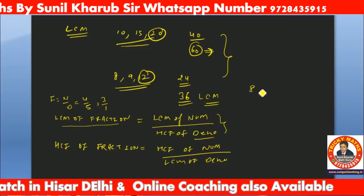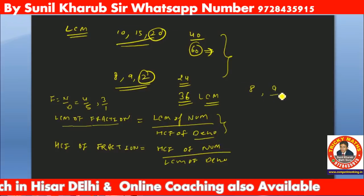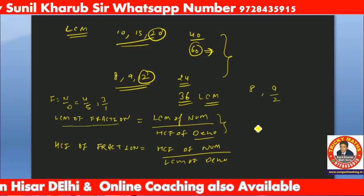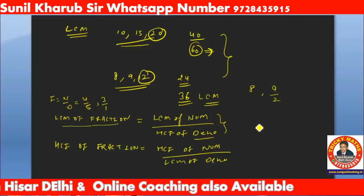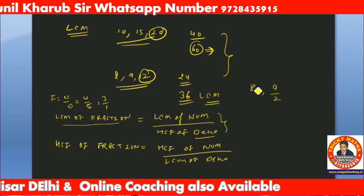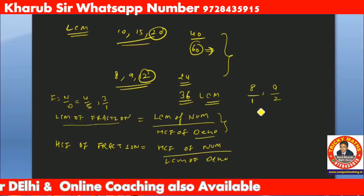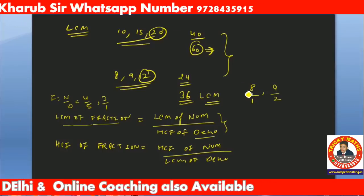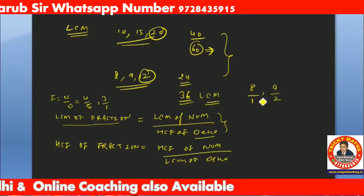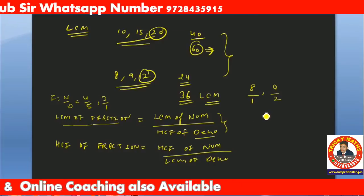Similarly, if you have to find the HCF of fractions, it is HCF of numerators divided by LCM of denominators. To summarize: for LCM of fractions - LCM of numerator over HCF of denominator; for HCF of fractions - HCF of numerator over LCM of denominator.